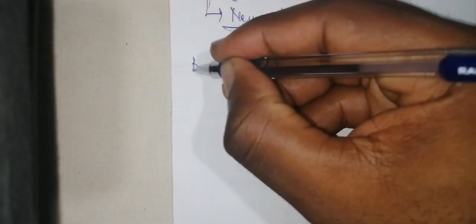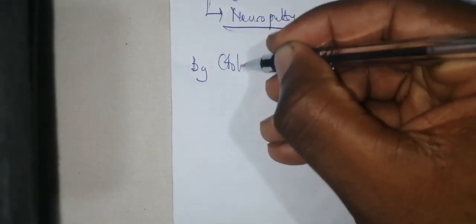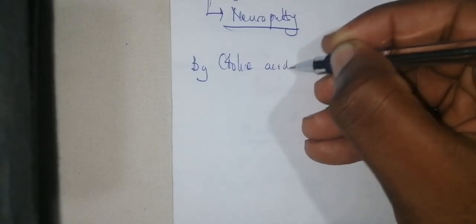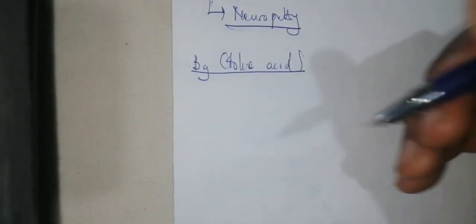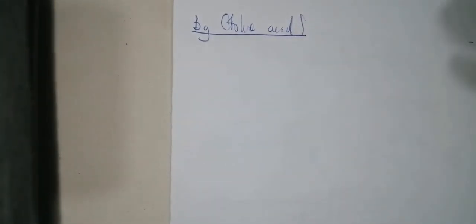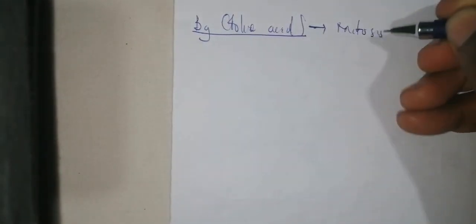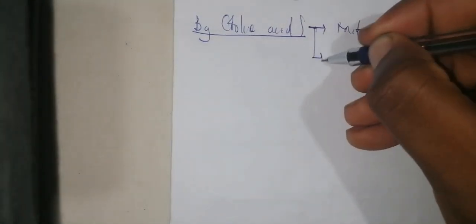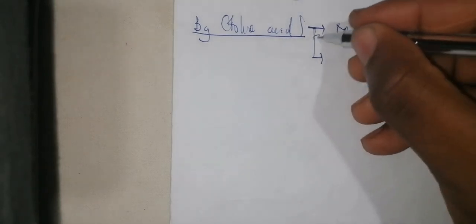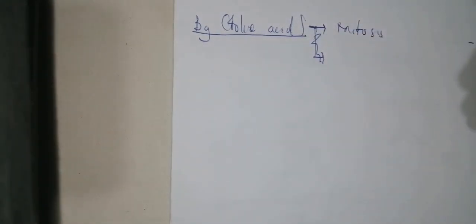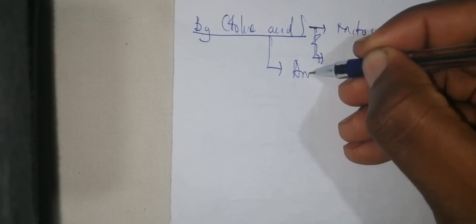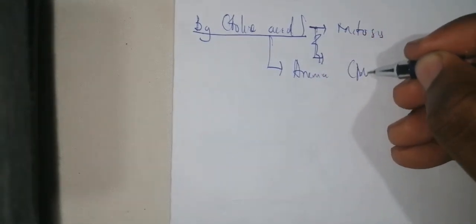There is no vitamin B7 or B8. Instead, we have vitamin B9, also called folic acid. Vitamin B9 is very important because it is involved with the multiplication of cells and mitosis. When there is a low level of vitamin B9, you are going to have an anemia called megaloblastic anemia.